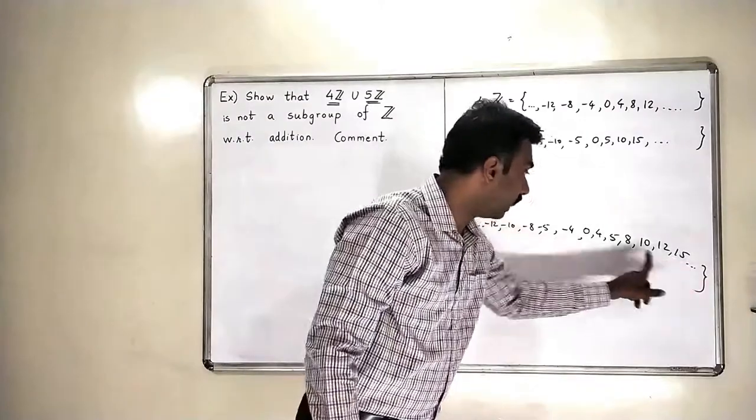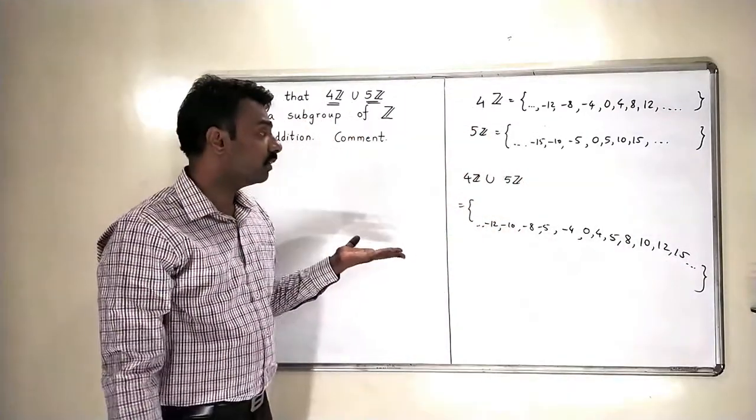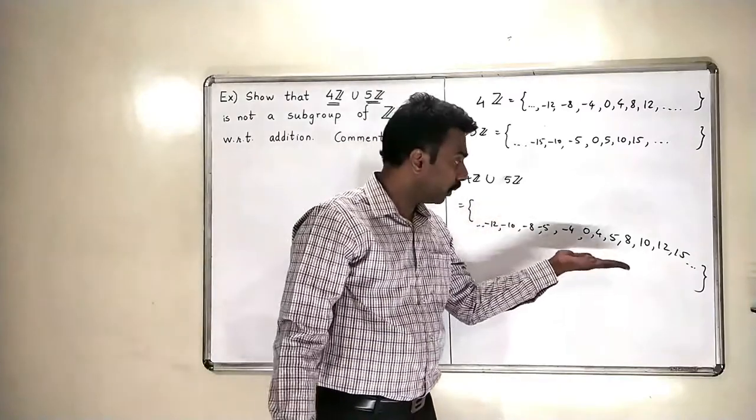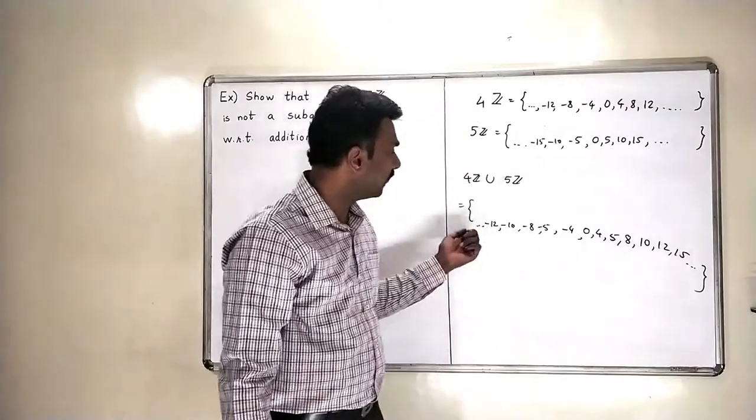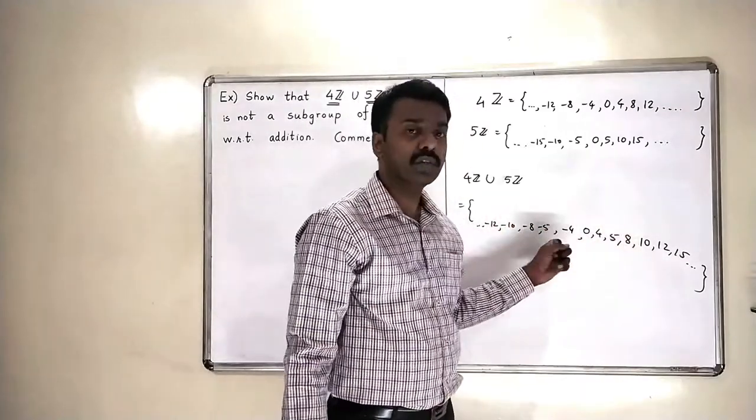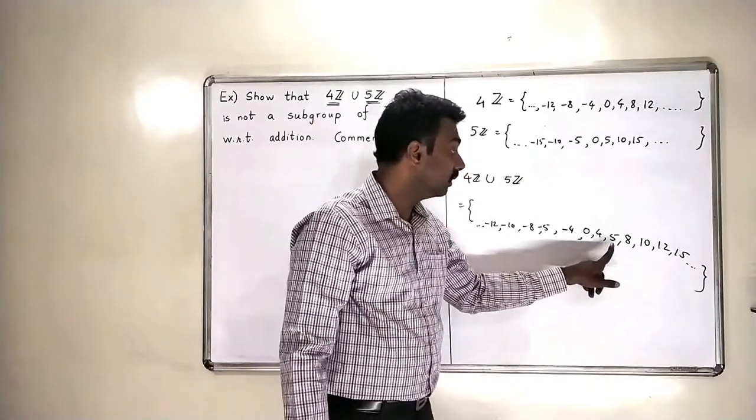So this is the set 4Z union 5Z. Now while this set cannot form a group with respect to addition. So we will start checking our usual properties, axioms. What are they? Closure, identity and so on. So if I pick up any two elements of this set, is their addition again in that set? That should be the meaning of closure.